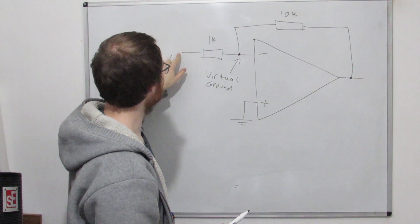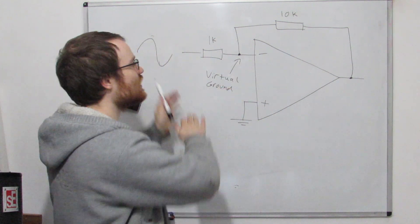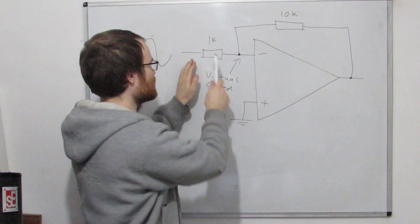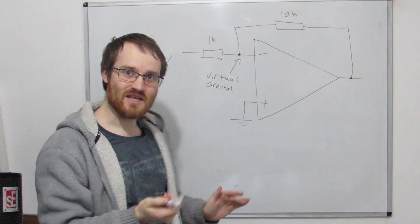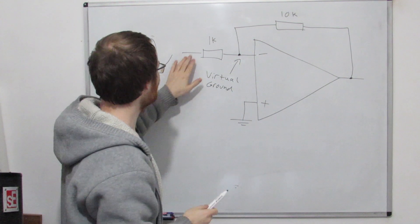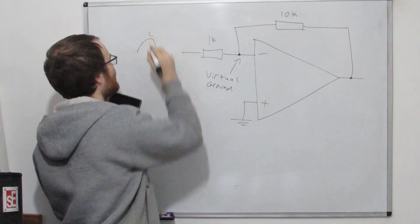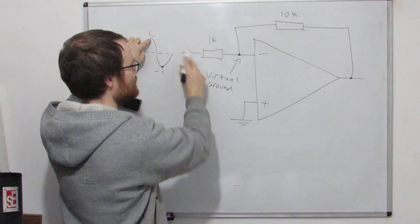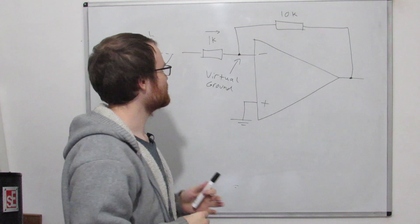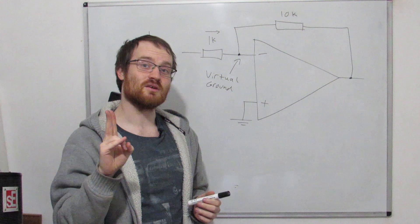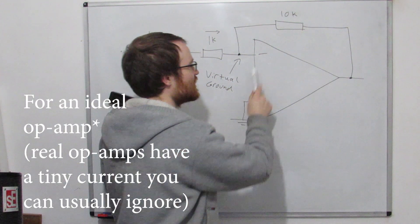If we have our input here and ground here, then our entire input signal is across this resistor. That makes it really easy to analyze, doesn't it? Because now we know, let's say this is one volt peak to peak again, so we've got one milliamp through this resistor.